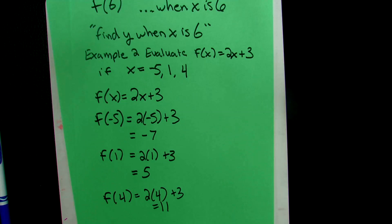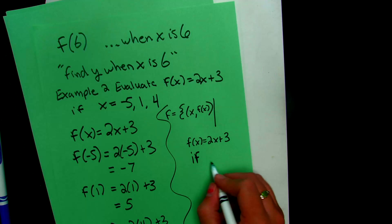So to describe the function in set builder notation is by pairing each value of the independent variable with the corresponding value of the dependent variable. So for example, we would say our function is equal to the set of (x, F(x)) such that F(x) = 2x + 3. That's our function rule. If x is equal to -5, 1, or 4. So we just evaluated all that information. So I could say that our function F is equal to these ordered pairs: (-5, -7), (1, 5), and (4, 11).